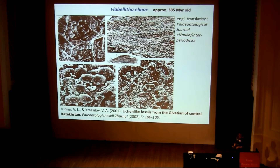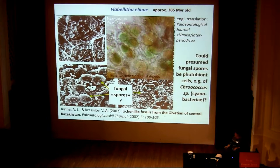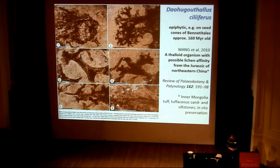Flabelita eline is a fossil found in the Givetian of Kazakhstan. It was suggested to be a lichen, although the photobiont has not been found. The authors interpret certain structures as spores, but there is no fruiting body around and no structure which would release asexual spores of this kind. So it could well be that these are the photobiont — a cyanobacterial photobiont as we see it nowadays in extant lichens — perhaps the photobiont which was so far missing.